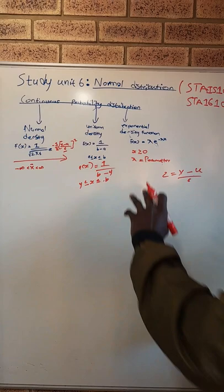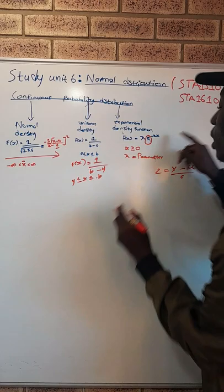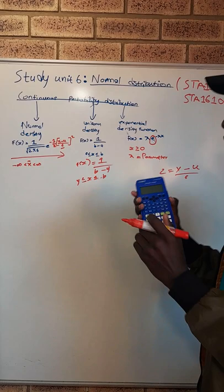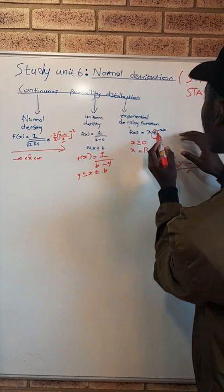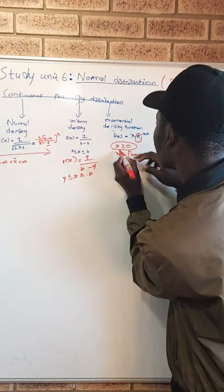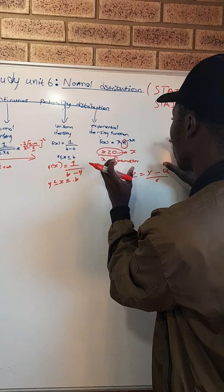Now let us talk about the exponential density function. With the exponential density function, f(x) is equal to lambda times e — and you can find e on your calculator by pressing Shift then ln — to the power of negative lambda multiplied by x, where x is greater than or equal to zero. Lambda is the parameter of the distribution.